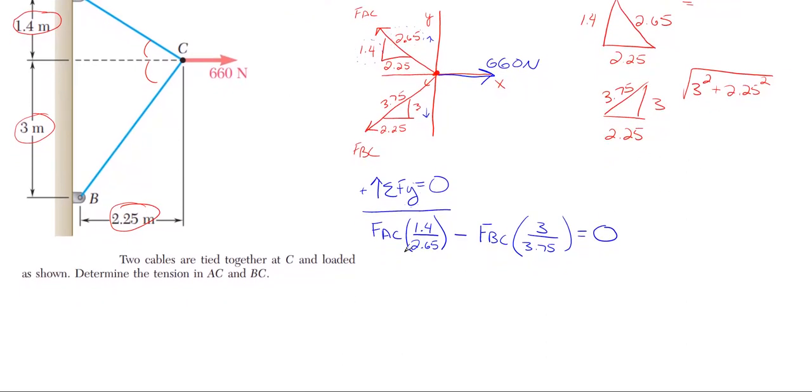Looking at this, we have one equation with two unknowns of FAC and FBC. Can't solve that. Anytime this happens where you cannot solve a direct equilibrium equation, you just go to your next one. For instance, we just did the Y. Can't solve for anything. So let's go to the X and see if we can solve for anything there. For the X direction, I'm going to take everything to the right as positive. And once again, since we're in equilibrium, everything has to cancel and be zero in this direction.